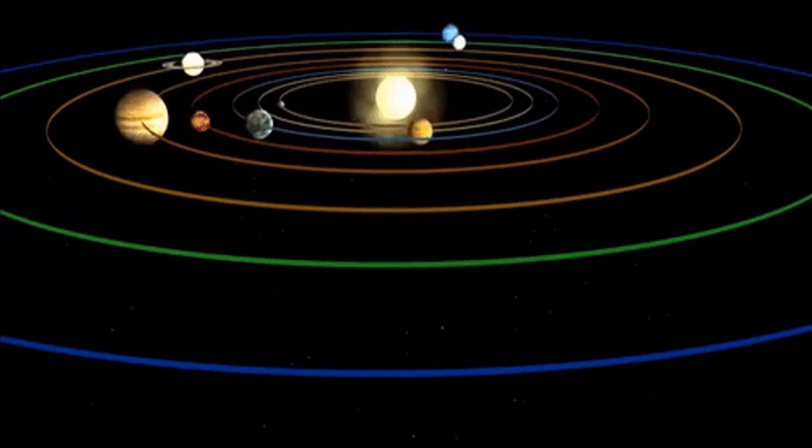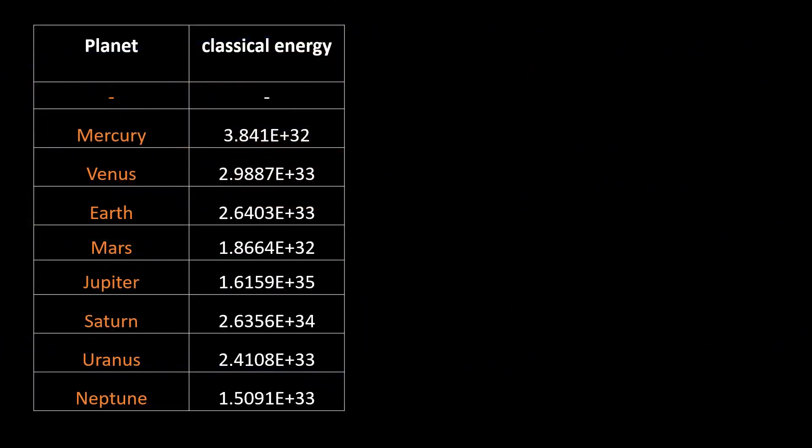According to NASA, these are the energies of the planets of our solar system. Let's choose two levels, the orbit of Jupiter and the orbit of Mercury, and take their energy difference.